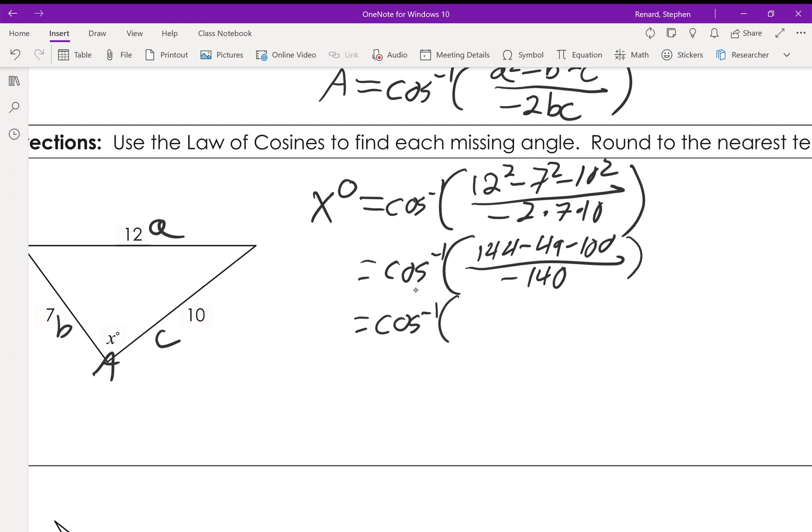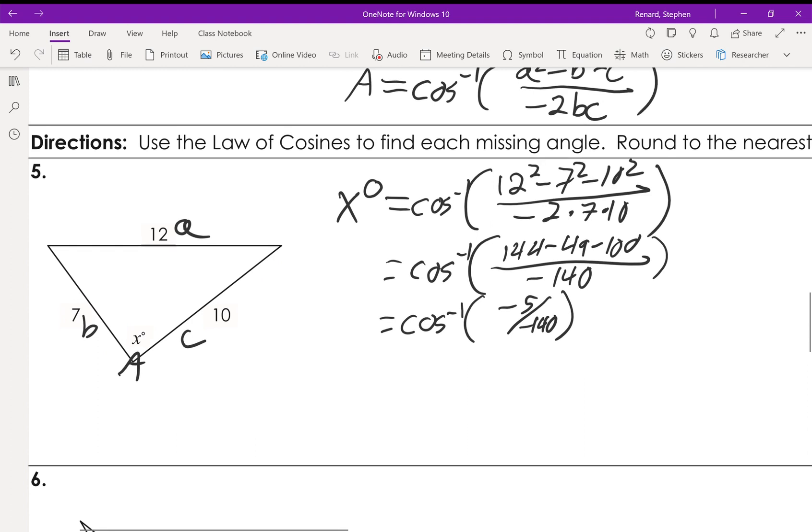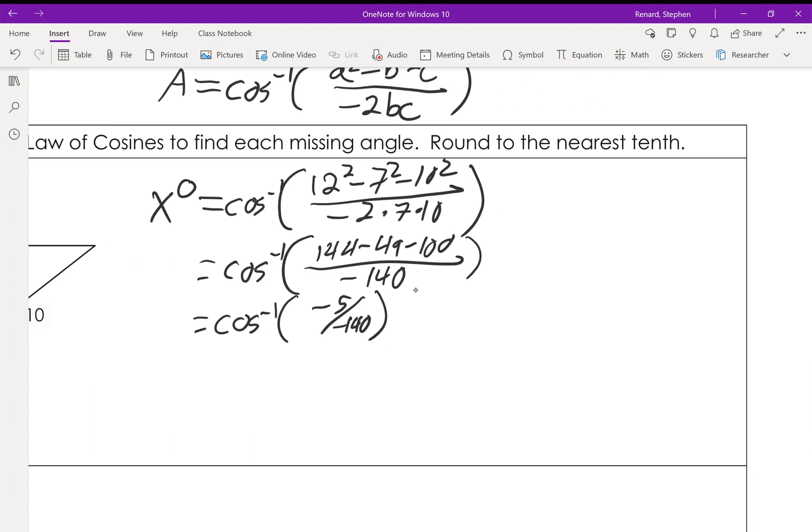That's going to give us negative 5 over negative 140. Now at some point you're going to get used to putting this into a calculator, but so what I'll have you do is on a calculator this is what you do: you'd hit the negative button, 5, divide by negative button, 140, enter.